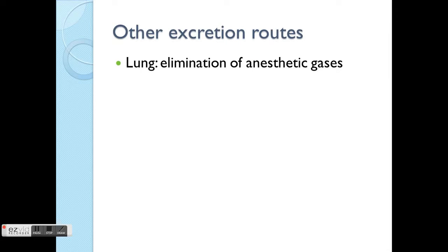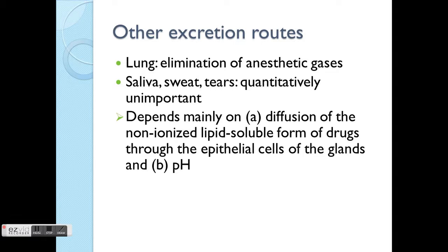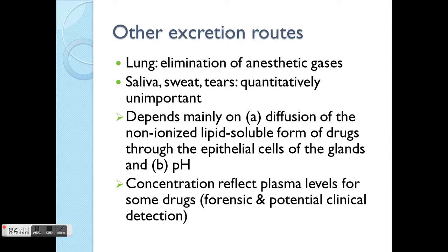Other excretion routes include the lung — for example, elimination of anesthetic gases when inhaled. There are also a few other minor routes such as saliva, sweat, and tears. Quantitatively they are not very important, but they are significant for other sections such as forensic or diagnostic purposes — they represent potential clinical detection routes.